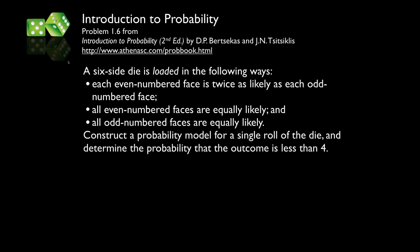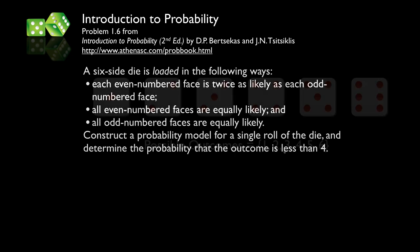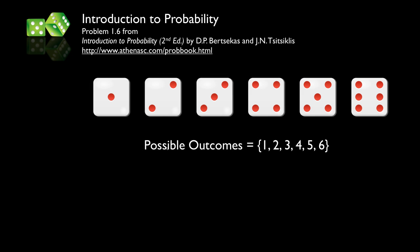Let's look at another problem — Problem 6 from Chapter 1. In this case, we have a six-sided die that is loaded. It's not a fair die; each even-numbered face is twice as likely as each odd-numbered face, all even-numbered faces are equally likely, and all odd-numbered faces are equally likely. We'd like to construct a probability model for a single roll of this die and determine the probability that the outcome is less than 4. The possible outcomes for one roll are 1, 2, 3, 4, 5, or 6.